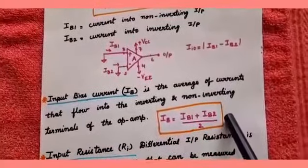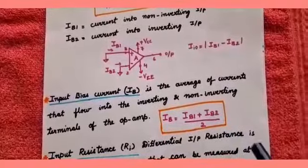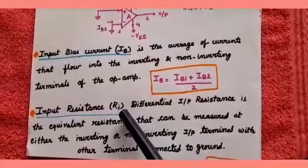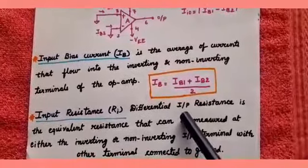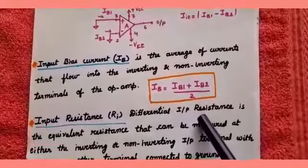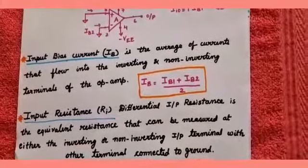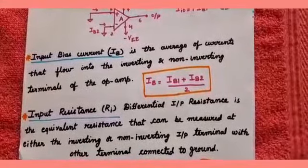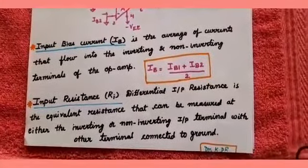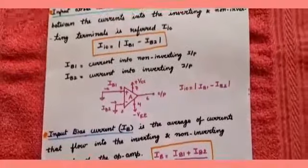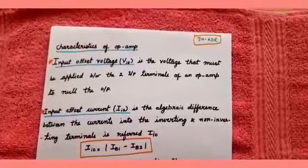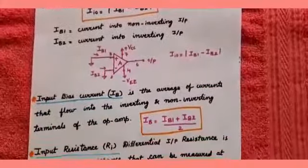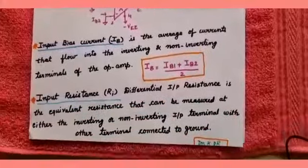Input bias current is the average of the currents at the non-inverting and inverting terminals of the op-amp. The next characteristic is input resistance Ri, also known as differential input resistance. Differential input resistance is the equivalent resistance that can be measured at either the inverting or non-inverting terminal with the other terminal connected to ground. So far we have seen: input offset voltage Vio, input offset current Iio, input bias current IB, and input resistance Ri.